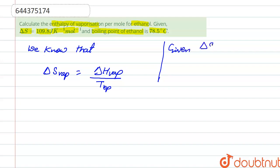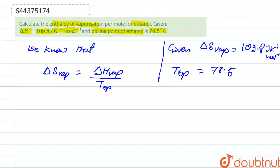Given: delta S of vaporization is 109.8 joule kelvin inverse mole inverse. The boiling point of ethanol, T_bp, is 78.5 degrees celsius, which we convert to kelvin by adding 273, giving us 351.5 kelvin. Substituting these values into the above equation: